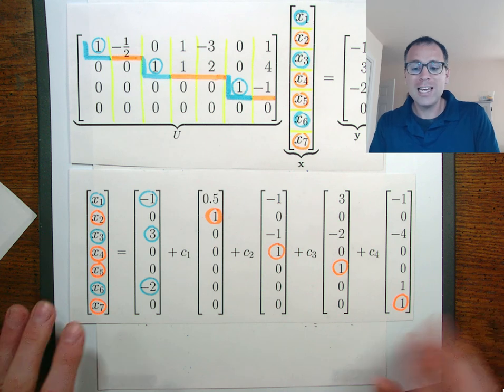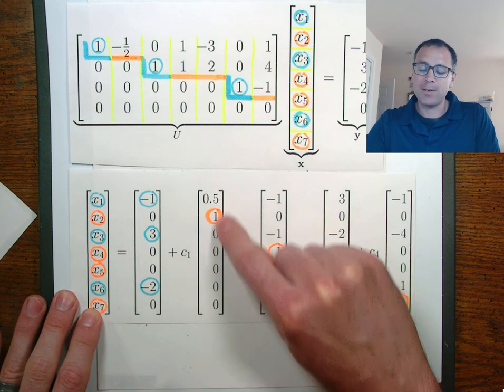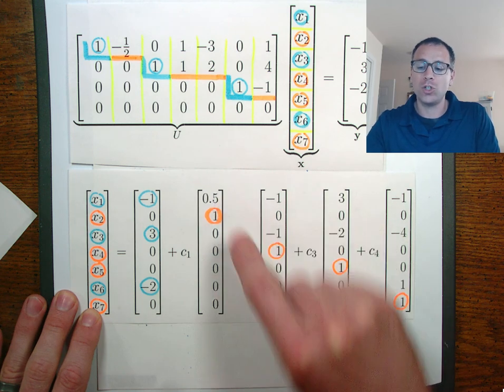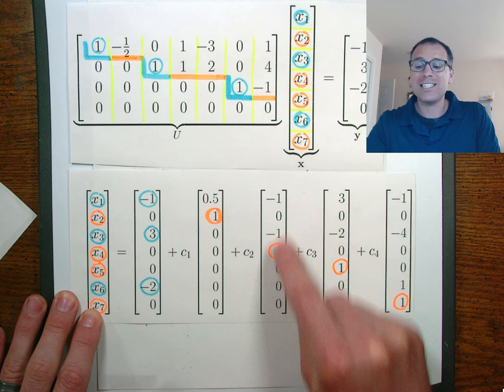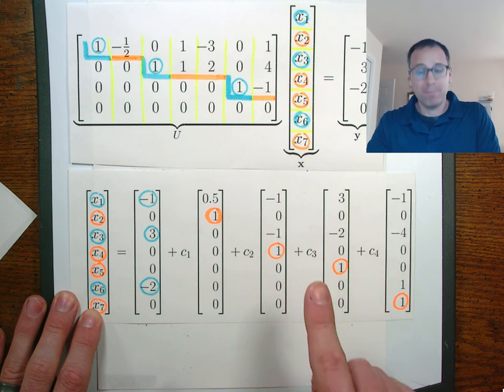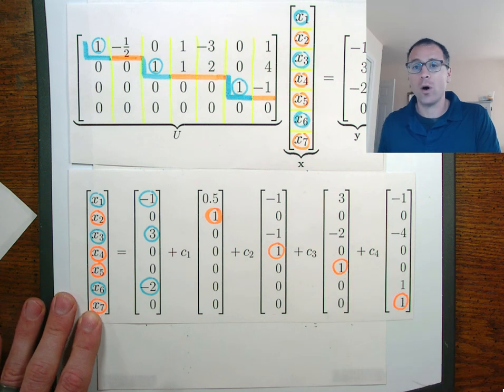Once again, the reason that we use the word free is because we are free to choose any scalar times that first special trivial solution. Any other scalar we're free to choose whatever we'd like times the second special solution. Third free variable we can choose anything we'd like in that position, and also fourth.